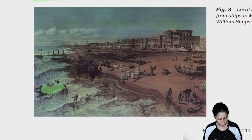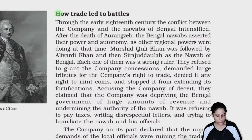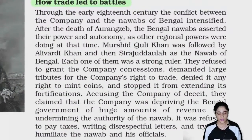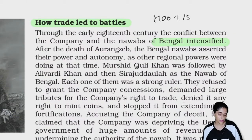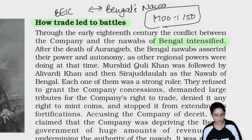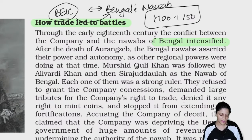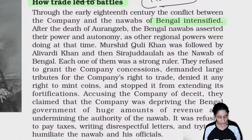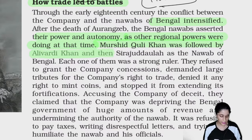There is a picture called local boats from this time, showing how trade led to battles. Through the early 18th century, the conflict between the company and the Nawab of Bengal intensified. Early 18th century was about 1700 to 1750. After the death of Aurangzeb, the Bengal Nawabs asserted their power and autonomy, as other regional powers were doing at that time. Murshid Kuli Khan was followed by Ali Vardy Khan and then Siraj Udaula.